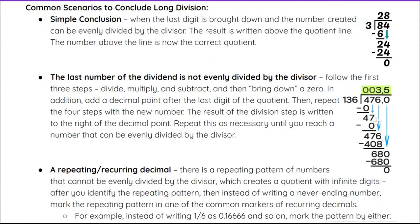The first one is simple conclusion. When the last digit is brought down and the number created can be evenly divided by the divisor, the result is written above the quotient line and the number above the line is now the correct quotient. We saw that in our previous video — for example, 24 minus 24 gave us a remainder of zero. Eight times three was exactly what we needed because 24 was divisible by three. So we subtracted and got zero — we're finished, with a remainder of zero. That is a simple conclusion.